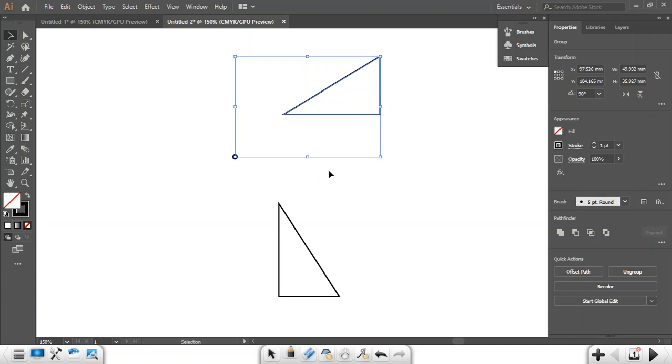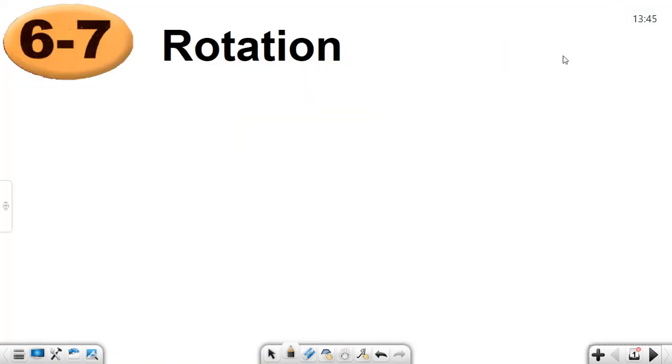So rotation doesn't have to be all the time on the shape. The constant point can be far away from the shape. That's the rotation: taking it, rotating around this point.